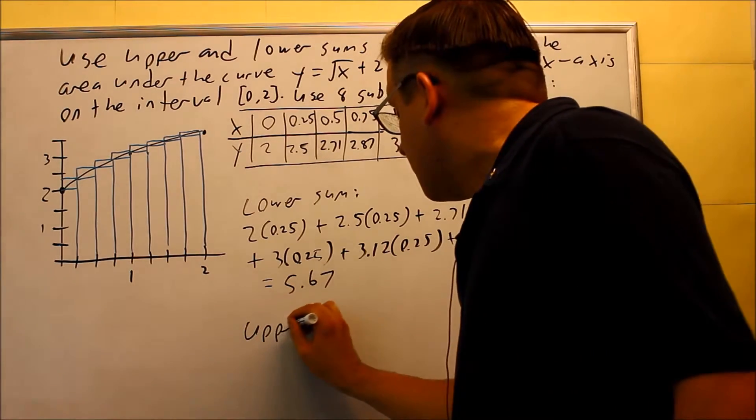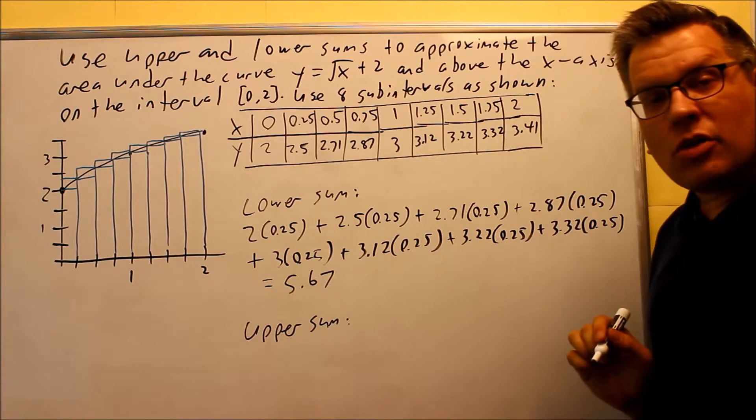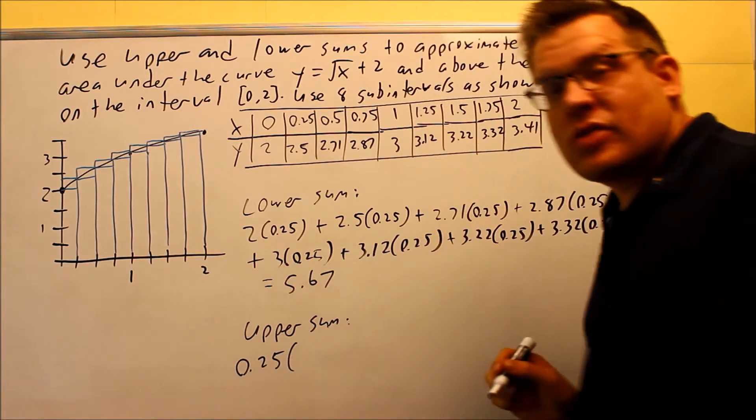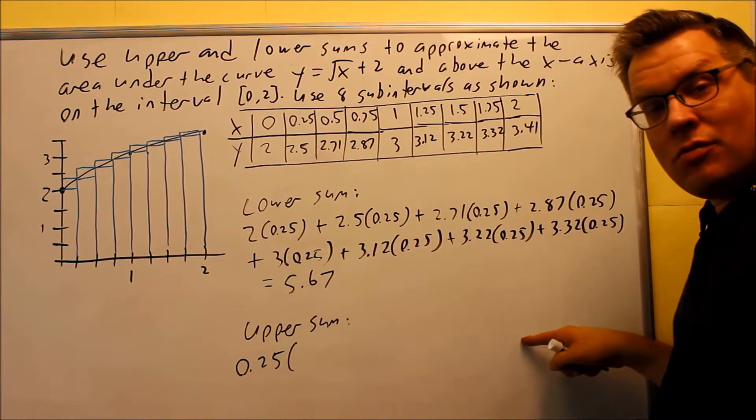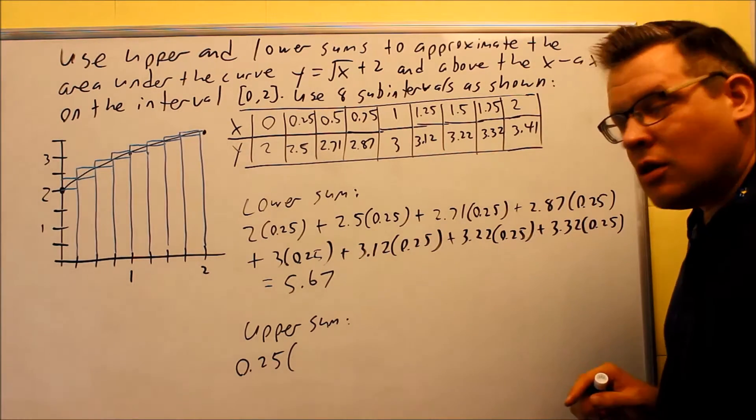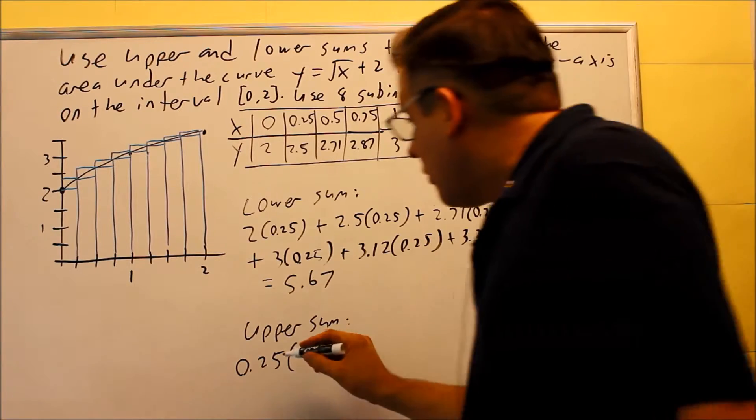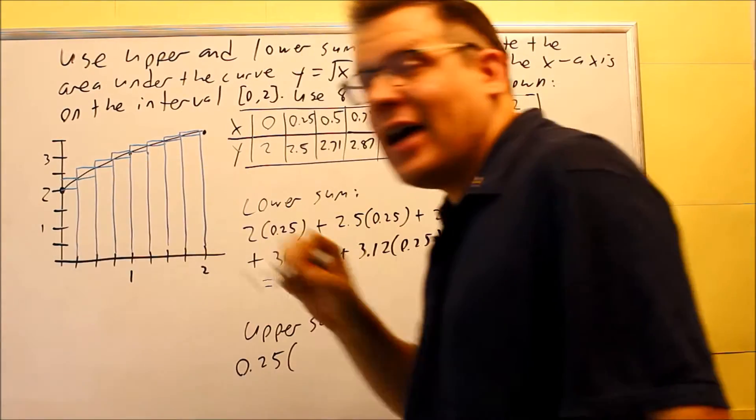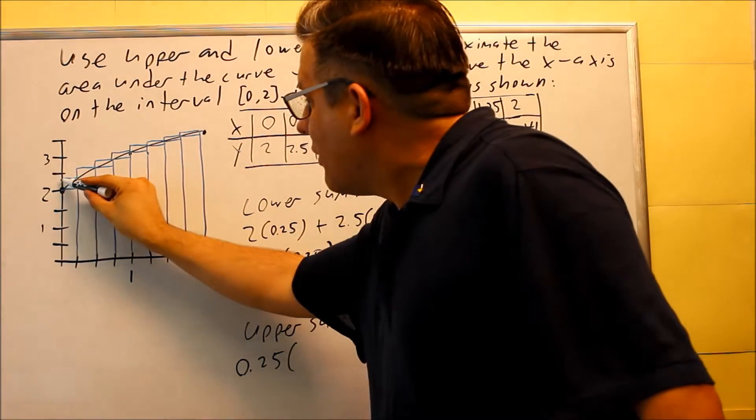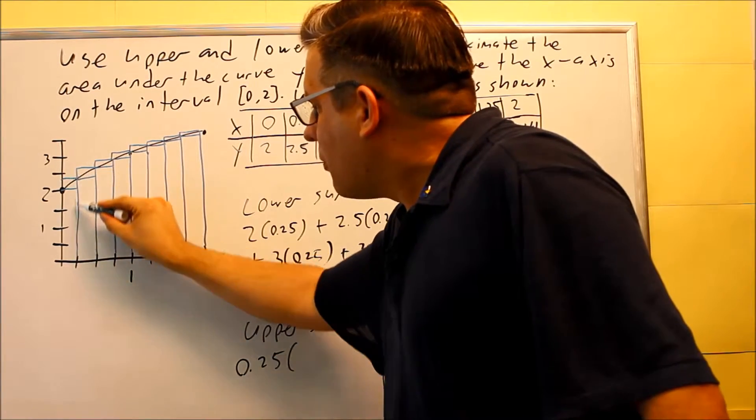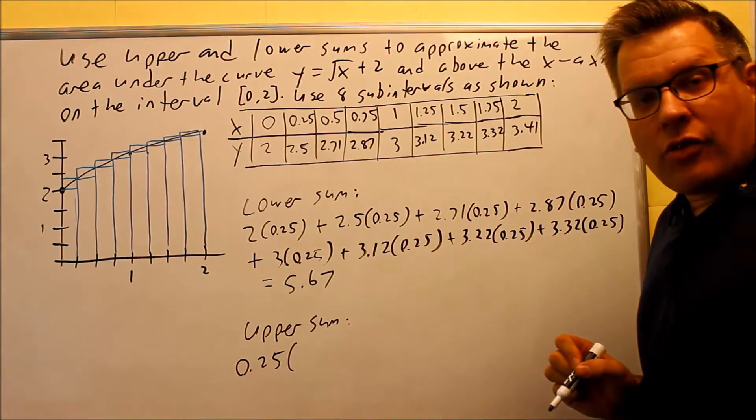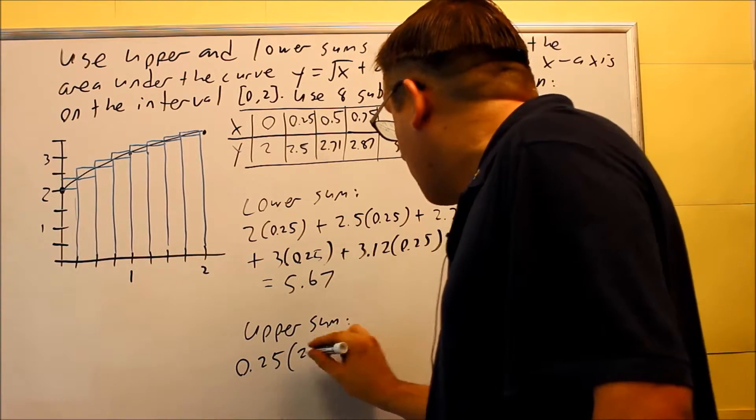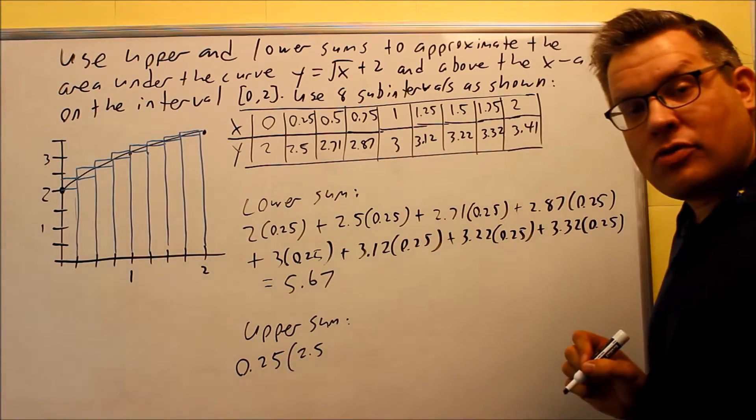Now I want to do upper sum. Here's something to make that easier when you're writing all this out. Instead of writing everything all times 0.25, I'm going to put 0.25 on the outside. Then I just need to put all the heights in here inside parentheses. It's going to make it easier to calculate. So for the upper sums, I need to look at what x value is giving me the height of the first rectangle. And I see here that at 0.25, that's where the height of the first rectangle is going to be at. So at 0.25, I'm at 2.5. So I'm just going to put the heights in here only because I've already accounted for the 0.25 on the outside.